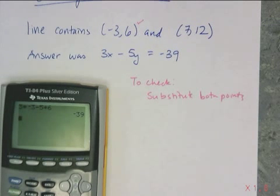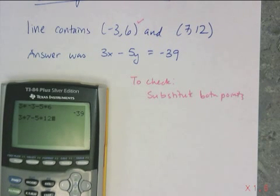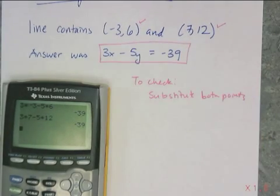So I'm going to do the same thing. 3 times 7 minus 5 times 12 and I also better get negative 39 or I messed something up somewhere. And I get negative 39. So that means that this equation here is correct.